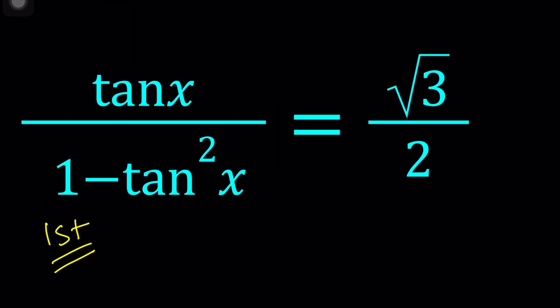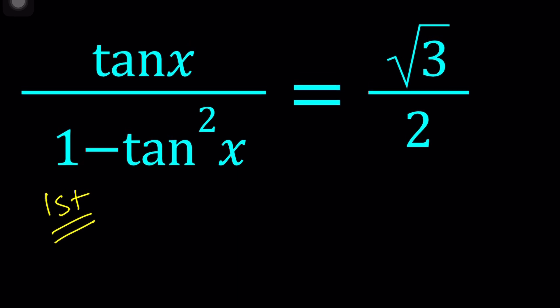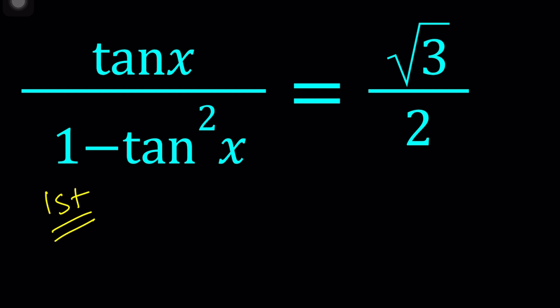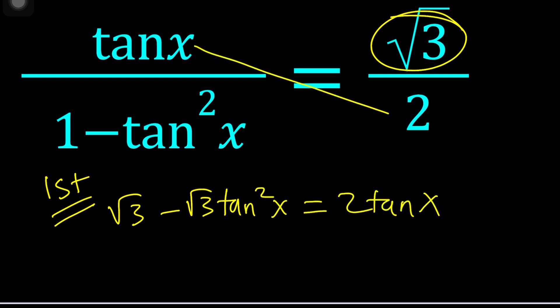So my first method is going to be a little bit more brute forcey and the second method will be more elegant. To solve this problem I'm going to cross multiply because we're given ratios so it makes sense to cross multiply. Let's multiply 1 minus tangent squared by square root of 3 which gives us square root of 3 minus square root of 3 times tangent squared x equals 2 times tangent x which is 2 tangent x.